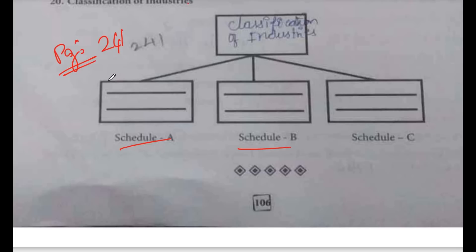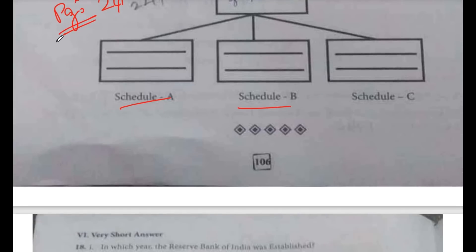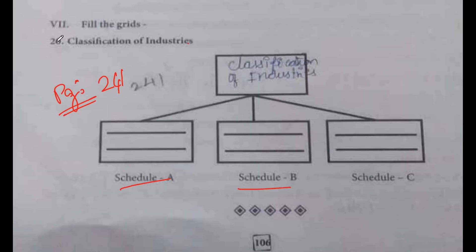So the order is A, B, C. That completes all 22 worksheets for social studies. Thank you friends, hope this video was useful.